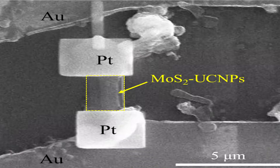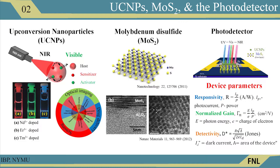Our device is on a single flake of MoS2 — molybdenum disulfide — with an active area of only about 5 micron square. In this work we tried to use two materials: one to absorb the light and the second one to transport the charge carriers.